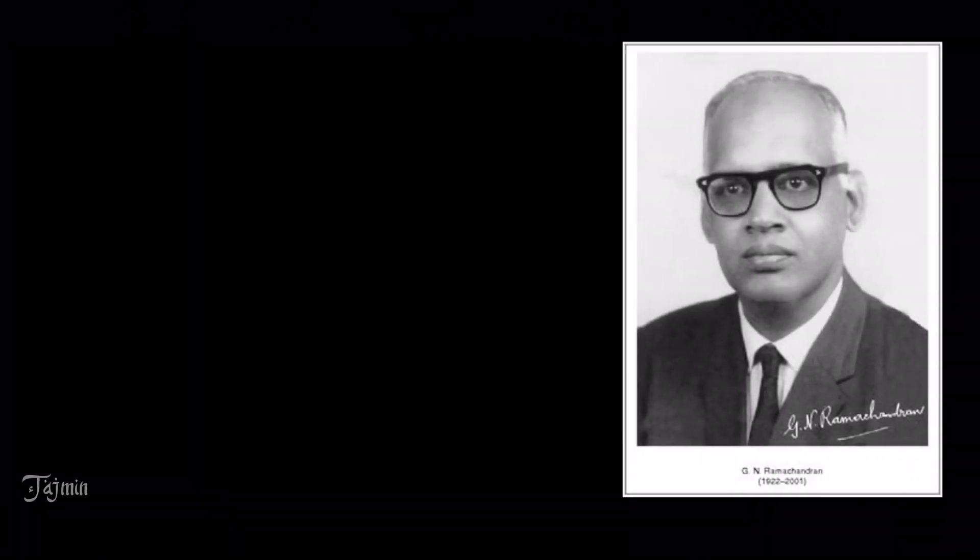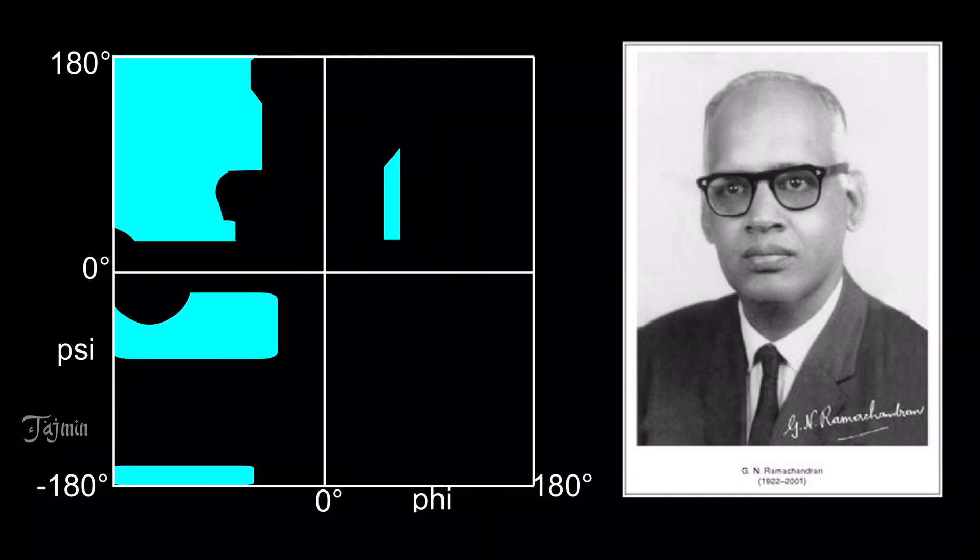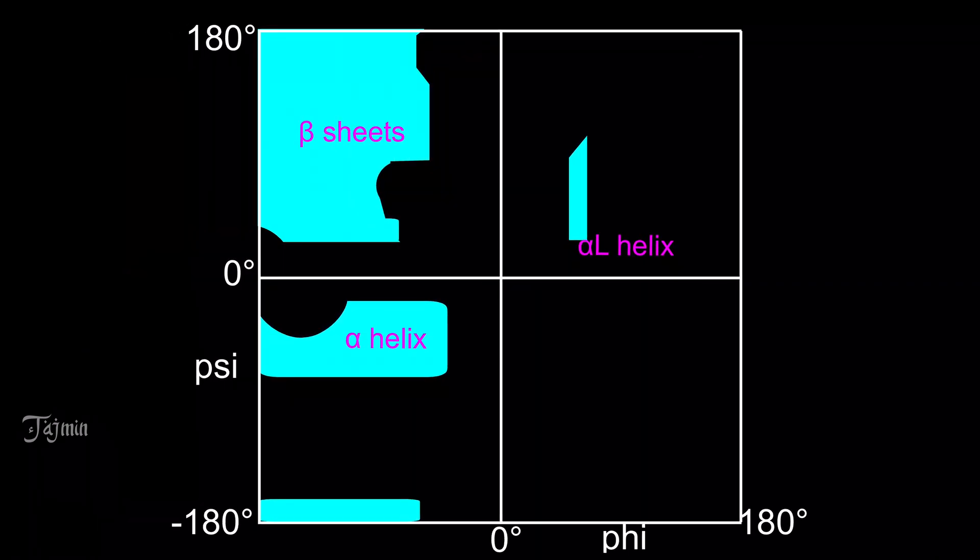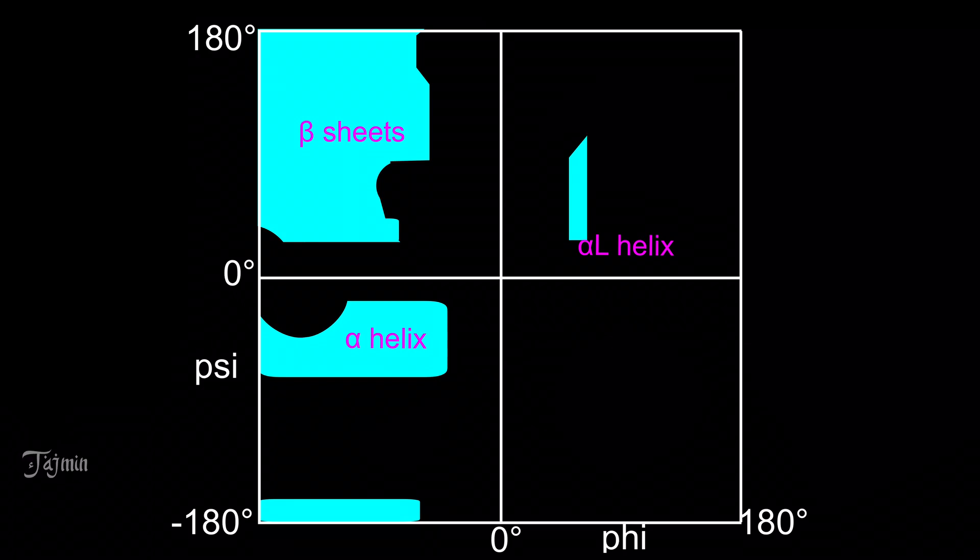In the year 1963, an Indian scientist G. N. Ramachandran proposed a plot to describe the conformational changes allowed by the secondary structure elements of a protein molecule. This plot is known as Ramachandran plot where phi values are plotted on x-axis and the psi values are plotted on y-axis.